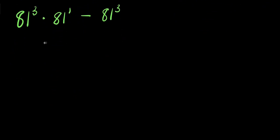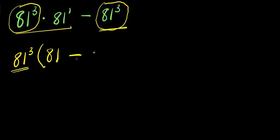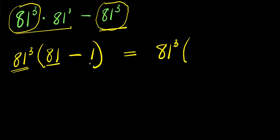So at this point I can factor out 81 to the power of 3 — it appears here and also appears right here. So I have 81 to the power of 3 times, this will divide 81 power 3, I have 81 which is the same thing as 81 power 1, minus this will divide 81 power 3. So from here I will simply have 81 power 3 times 81 minus 1, which is 80.